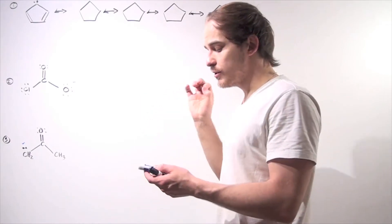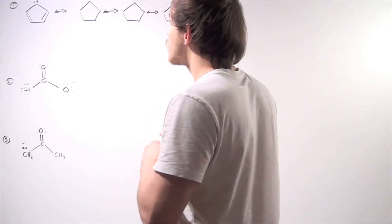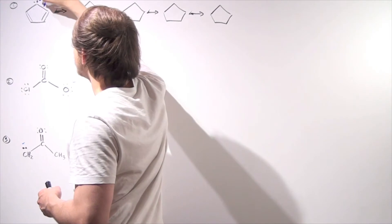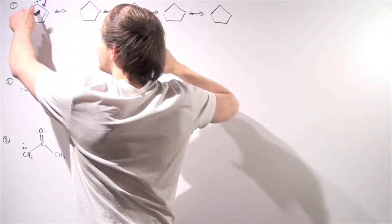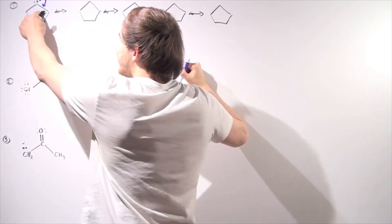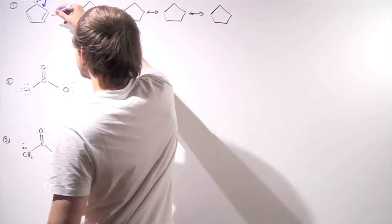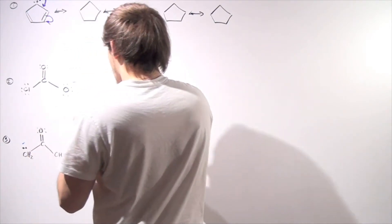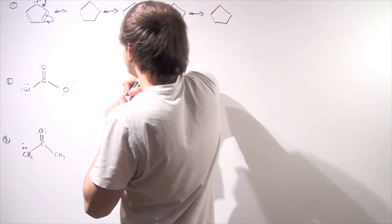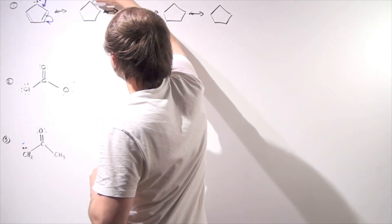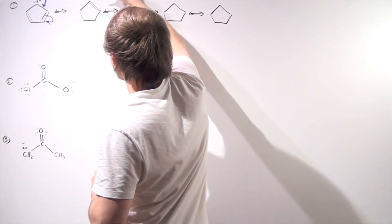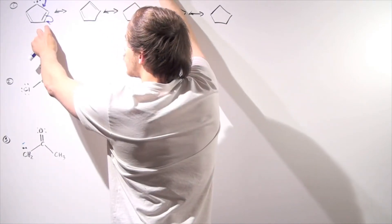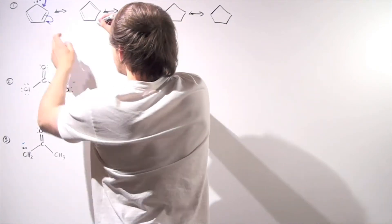Let's begin by moving this lone pair of electrons to form the following double bond, kicking off and displacing this double bond. This lone pair of electrons goes onto this carbon, so we form a double bond between these two carbons. This double bond remains, and now our lone pair of electrons is found on this carbon.